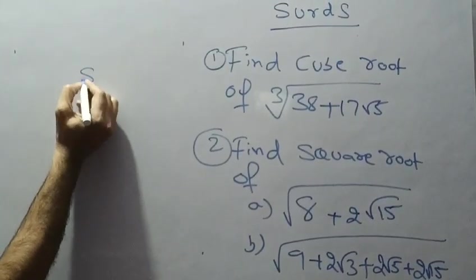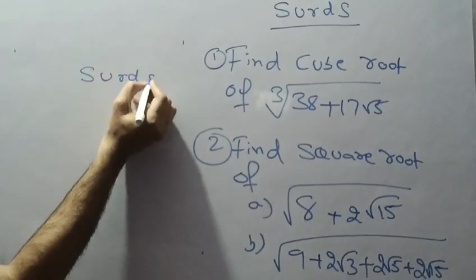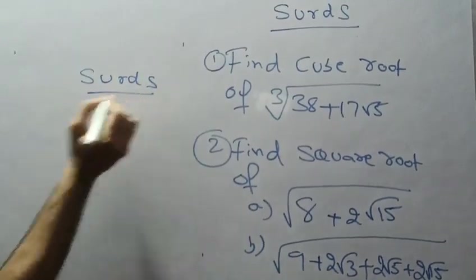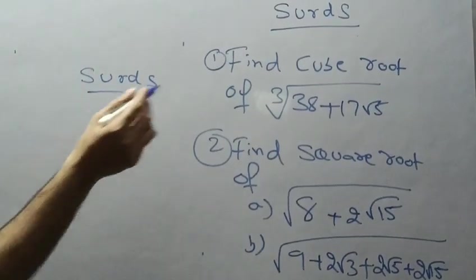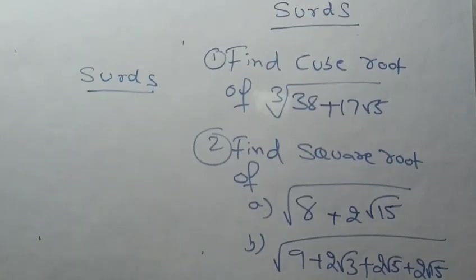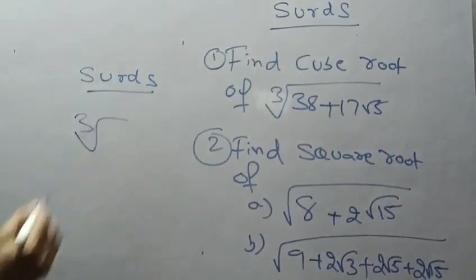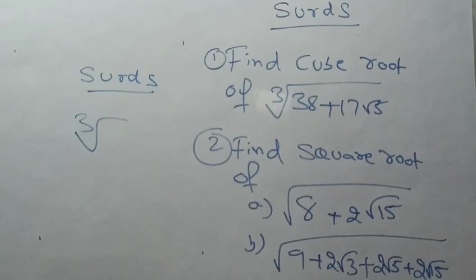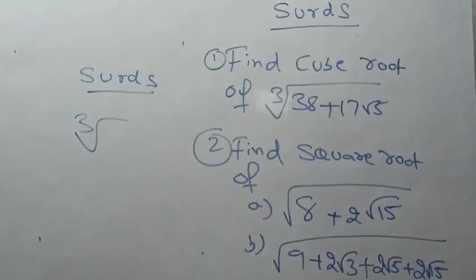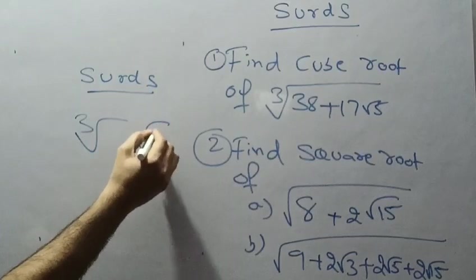These are the numericals in the search chapter. Here we have numericals to find the cube root and square root. We will apply a shortcut method to find the cube root and square root.